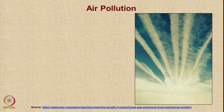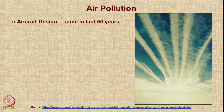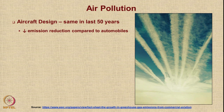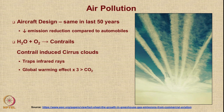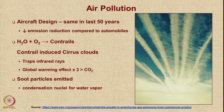Another relatively unknown form of air pollution is the creation of contrails behind aircraft. Aircraft design has remained almost the same in the last 50 years, whereas automobiles have done much more to reduce emissions. Water vapor and oxygen in the atmosphere create what are called contrails — those clouds seen behind aircraft — known as contrail-induced cirrus clouds. These clouds trap infrared rays, and their global warming effect is actually 3 times that of carbon dioxide. The engine exhaust also emits soot particles, which act as nuclei for condensation of water vapor, causing these contrails.